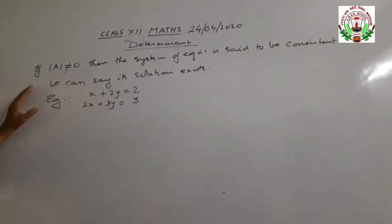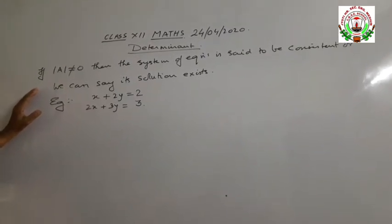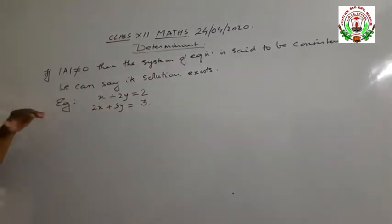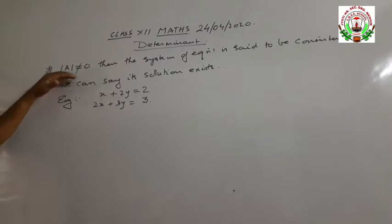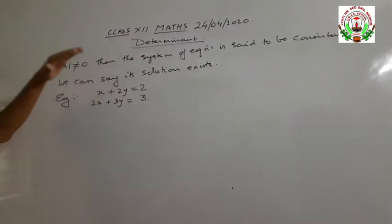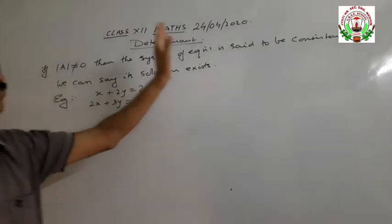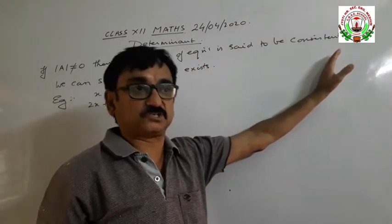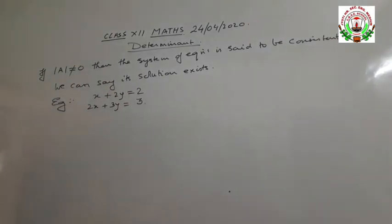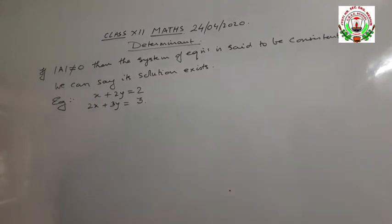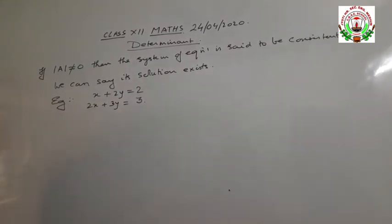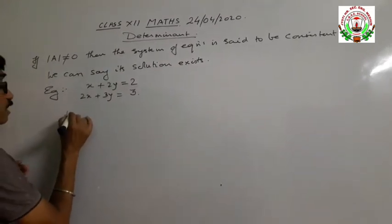Now let's come back to our next class on determinants. As I have earlier told in the previous classes, if the determinant value of A is not equal to 0, then its solution exists and the system of equations is said to be consistent. If it is asked to check whether the given system of equations are consistent or inconsistent, we have to find first its determinant value.